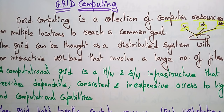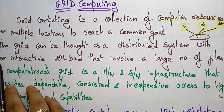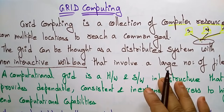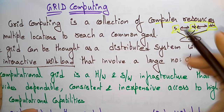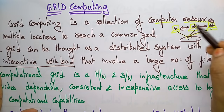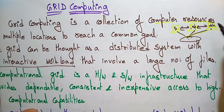Grid computing is similar to a distributed system, but the key difference is that grid computing involves a non-interactive workload with a large number of files. In a distributed system, there is interaction between systems, and large work is divided into groups with a dependency relationship between them.